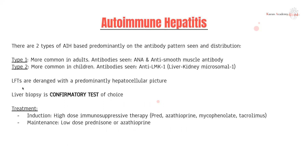No surprises there. The confirmatory test of choice is a liver biopsy. We often get asked what's the first investigation, what's the confirmatory investigation, what's the best investigation — I've put those in for each condition. So your go-to best confirmatory test for autoimmune hepatitis is a liver biopsy.